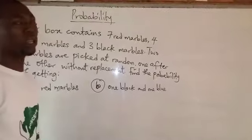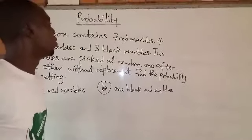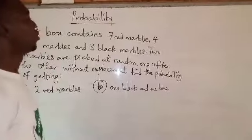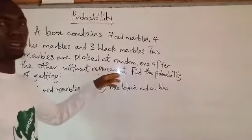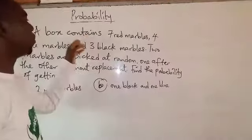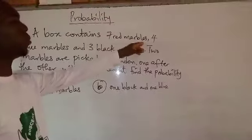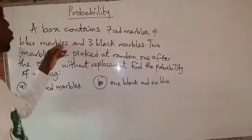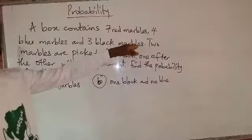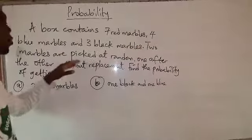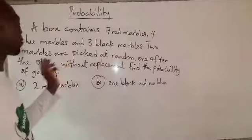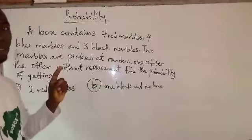Good morning viewers at home. This is another one on probability, dealing with without replacement. A box contains 7 red marbles, 4 blue marbles, and 3 black marbles. Two marbles are picked at random, one after the other, without replacement.